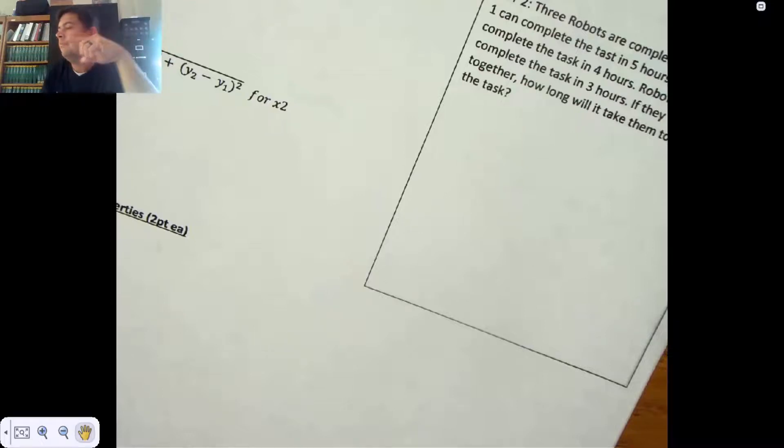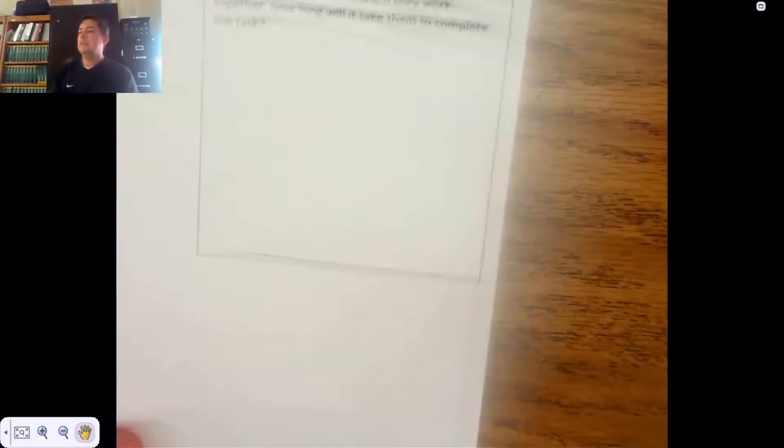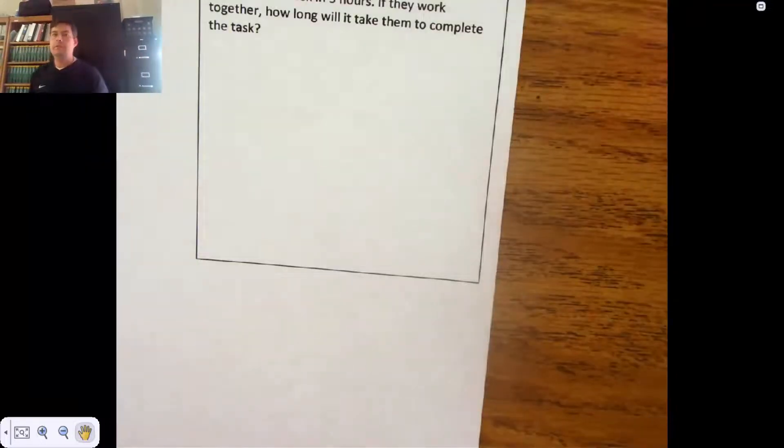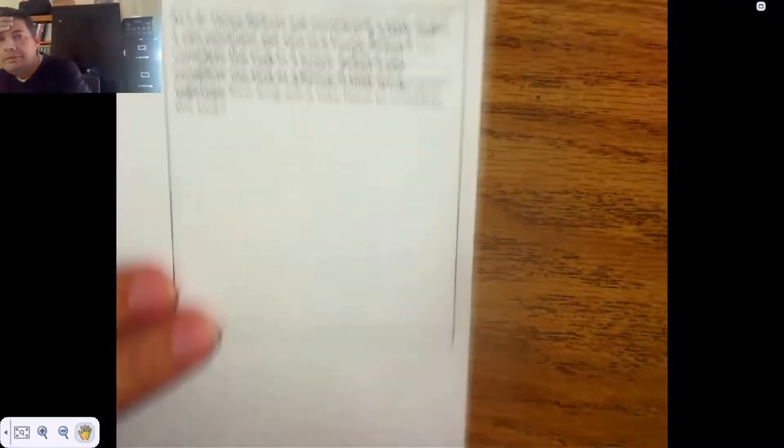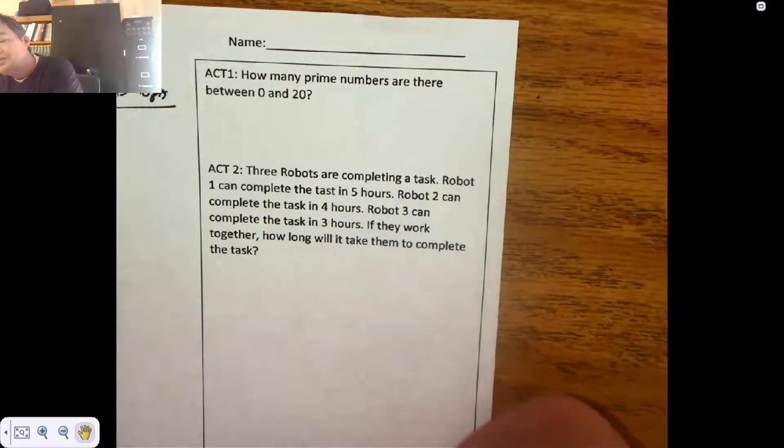And I'm live. All right, so basics seven practice. Let's do this completely out of order. How about act one, as some kids say? How many prime numbers are there between zero and 20?